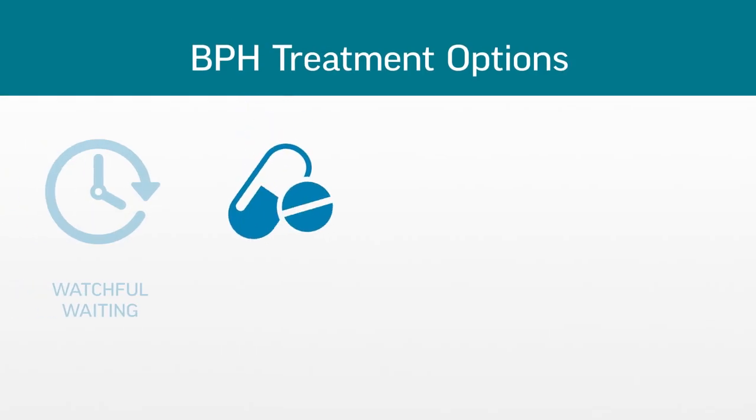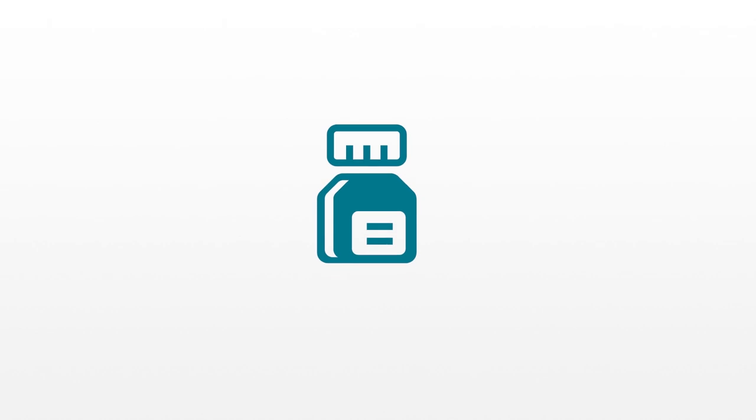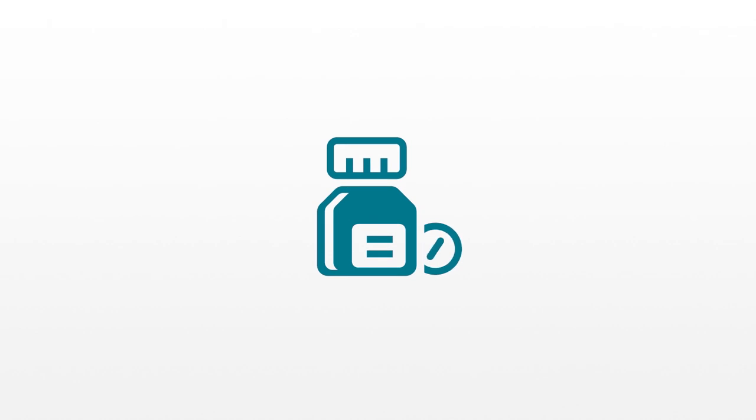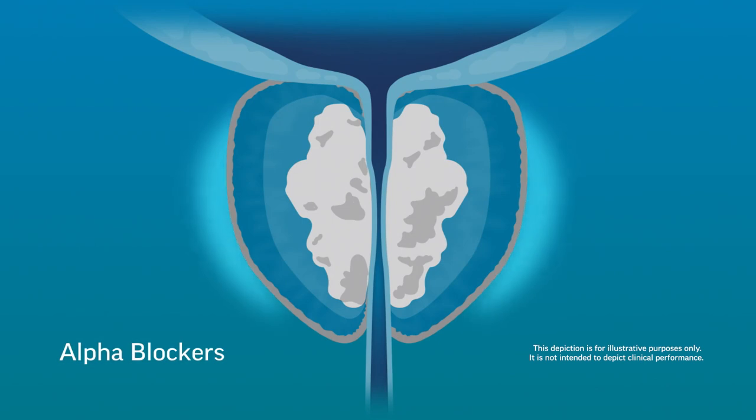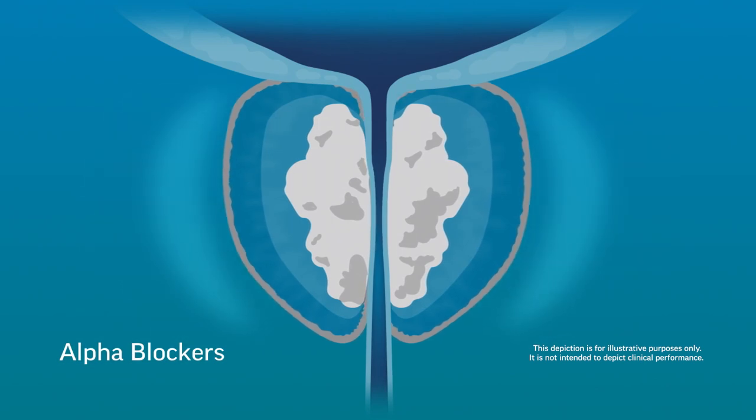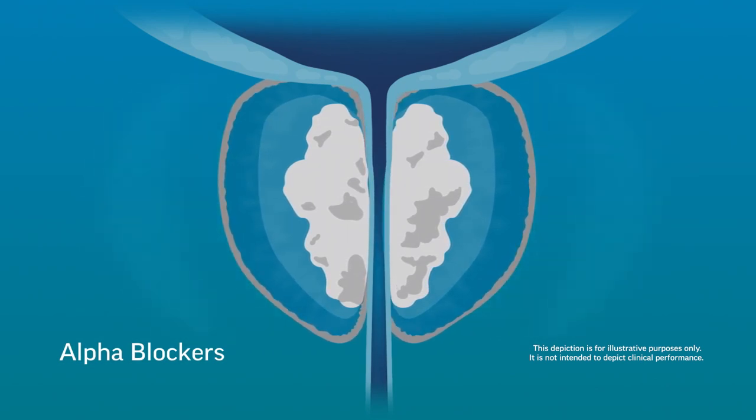Option two, medical management or drug therapy. Drugs may help alleviate symptoms in some men. Alpha blockers, such as Flomax and Rapaflo, relax the muscles surrounding the prostate, sometimes reducing the obstruction enough to improve symptoms.